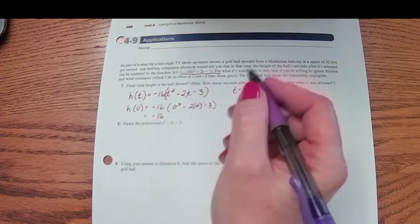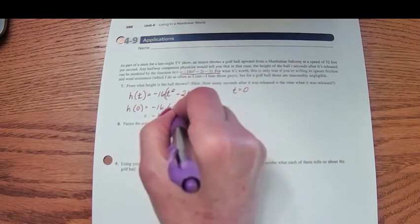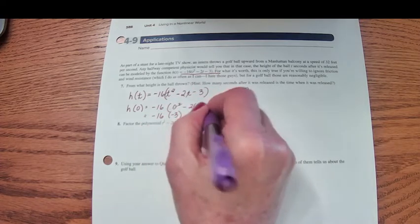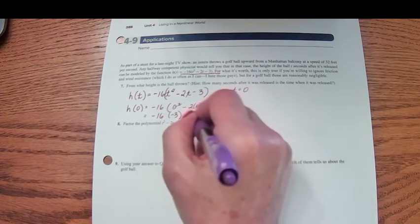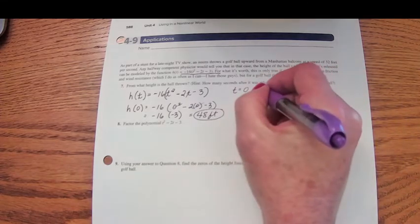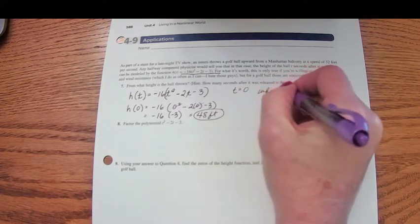That's going to be 0 minus 0 minus 3. Negative 16 times negative 3 is positive 48 feet. This golf ball was thrown from a height of 48 feet, so t equals zero is the exact moment when the ball is thrown.